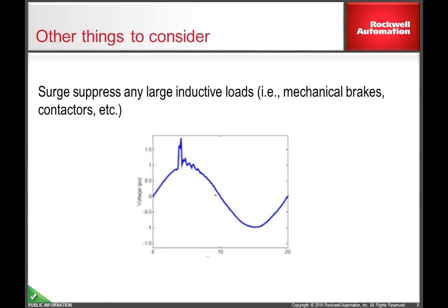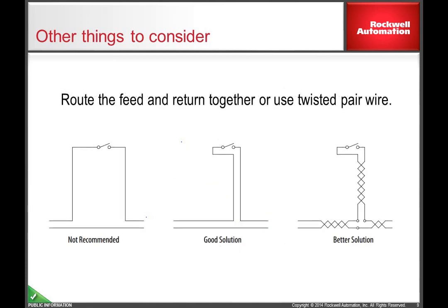Voltage transients are known to be created in an electrical system when power is applied to certain devices. These voltage transients have been known to damage sensitive equipment or negatively affect their behavior. Be sure to provide surge suppression on these devices to minimize their effect on other devices. When routing the wire, avoid creating a loop that could act as an antenna. Route the wire together or use twisted pair wire. Also, take care not to nick the insulation and verify there is no insulation damage when pulling the wire through a tight location.